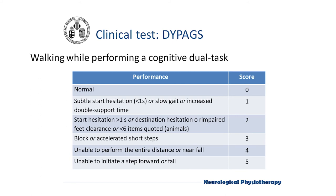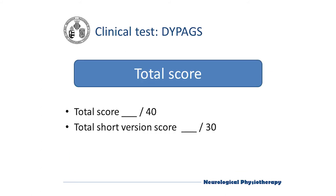If we perform the whole test, we add the points of each item, with 40 being the maximum possible score. In the short version, we ask the patient which side they prefer for the turning test and which leg they prefer for the obstacle step. Therefore, in the short version the maximum score will be 30 points.